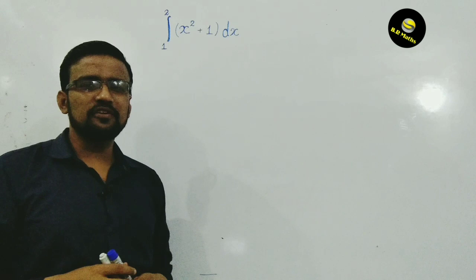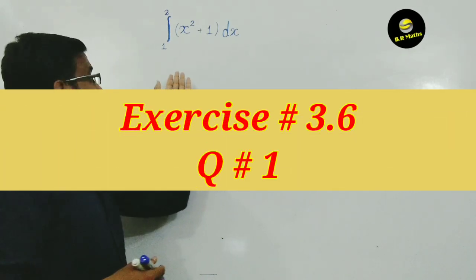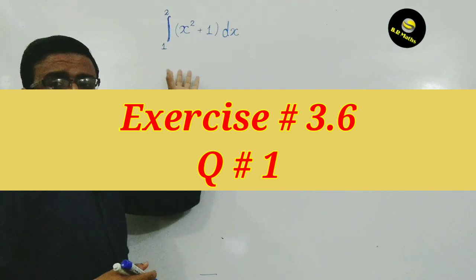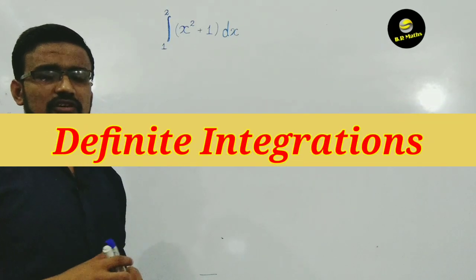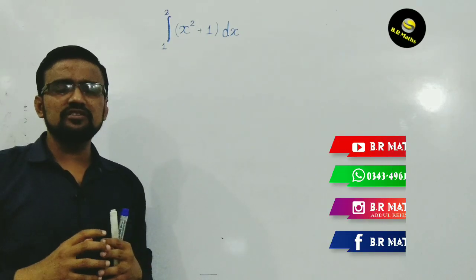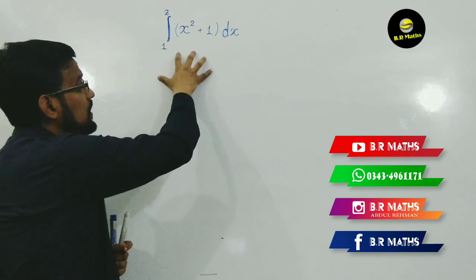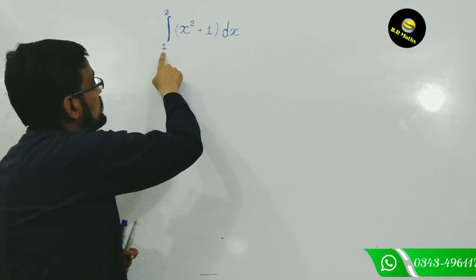Assalamu alaikum students. Today I am here to discuss this integration - evaluate this finite integration. Finite means the limit along the x-axis is given, because integration means area under the curve. Here the lower limit is 1 and upper limit is 2.